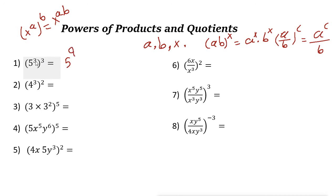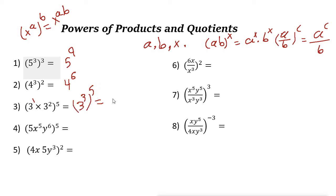For example, 5 to the power of 3, the whole thing to the power of 3: it's not 3 plus 3, you need to multiply. So 3 times 3 is 9, giving 5^9. This one: 4 to the power of 2, whole thing to the power of 3 — that's 4^6. And 3^1 times 3^2 to the power of 5 equals 3 to the power of 15, since 3 times 5 is 15.